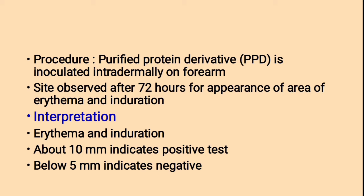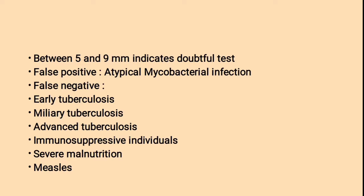Interpretation: erythema and induration of 10 mm or more indicates a positive test; below 5 mm indicates negative; between 5 and 9 mm indicates doubtful. False positive results may occur in atypical mycobacterial infection. False negative may occur in early tuberculosis, miliary tuberculosis, advanced tuberculosis, immunosuppressive conditions, severe malnutrition, and measles.